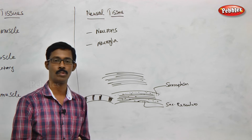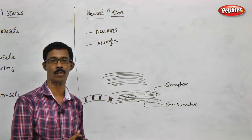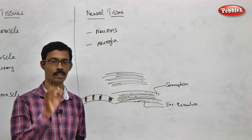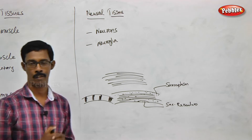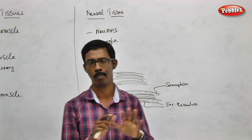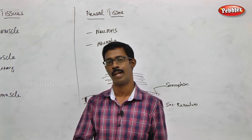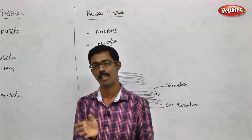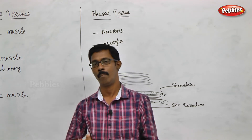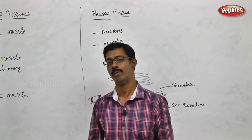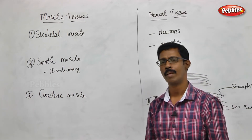Muscle fibers are packed tightly in connective tissue. The sarcoplasmic reticulum and multinucleated structure are characteristics of muscular tissue. Based on the striated appearance and structure, we can classify muscles into three types: skeletal muscle, smooth muscle, and cardiac muscle.